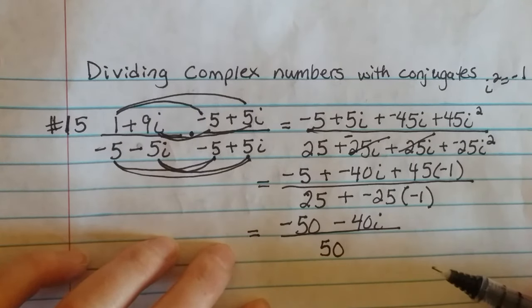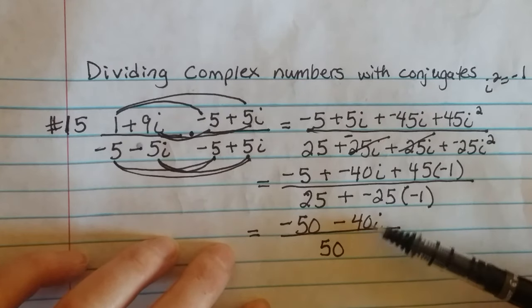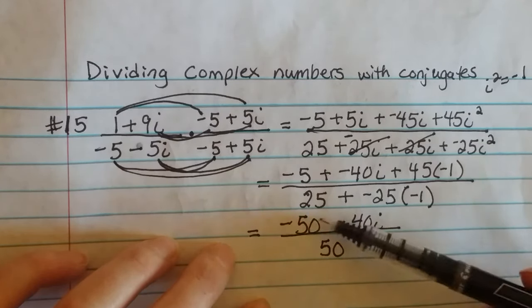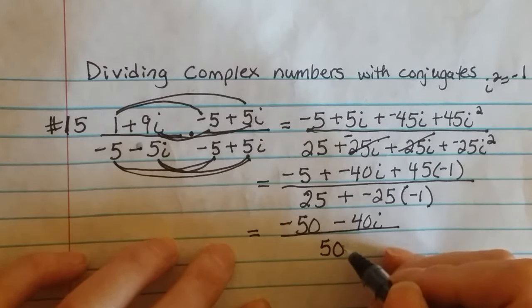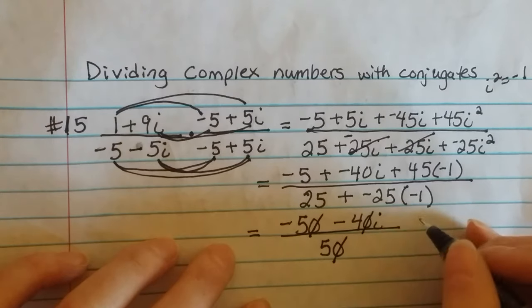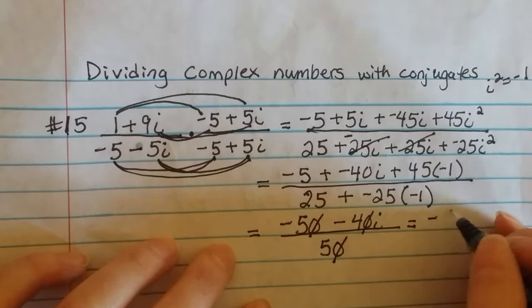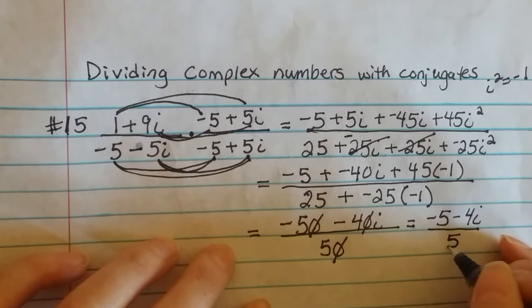Alright, now maybe you do or maybe you don't remember the rules with zeros. But if these are zeros, I can just cancel out all of the zeros. So this will actually simplify. This zero is going to cancel out with that one and that one. So this will reduce to -5 - 4i divided by 5.